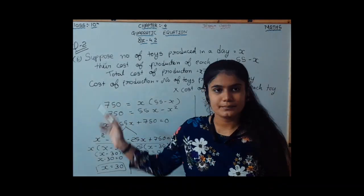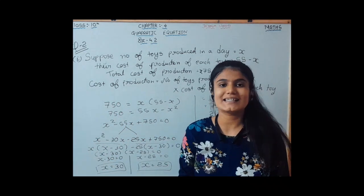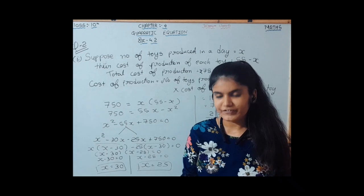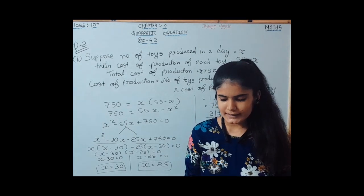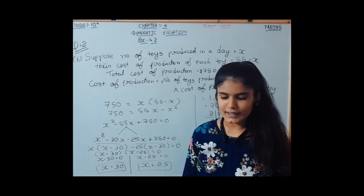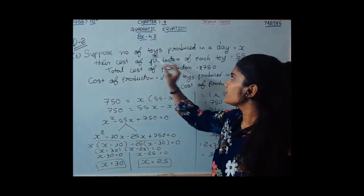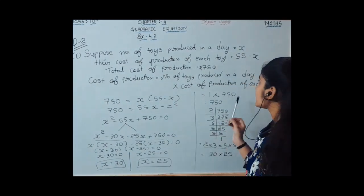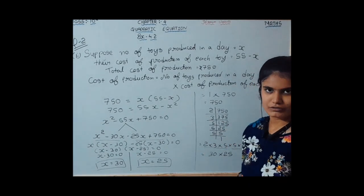Word problem 2: A cottage industry produces a certain number of toys in a day. The cost of production of each toy in rupees was found to be 55 minus the number of toys produced in a day. On a particular day the total cost of production was 750 rupees. Suppose the number of toys produced is x, so the cost of each toy is 55 minus x, and the total cost is 750.